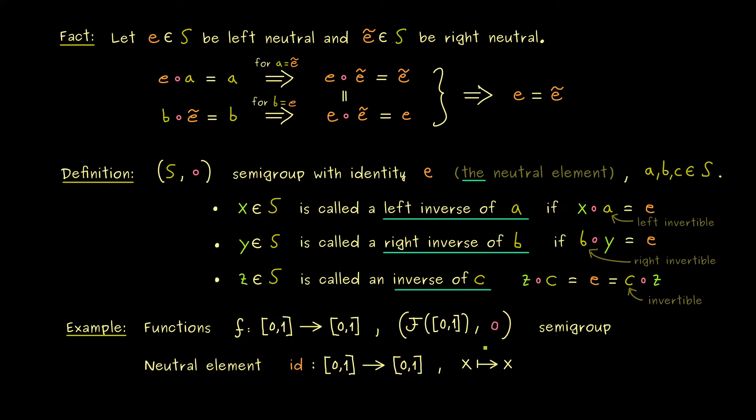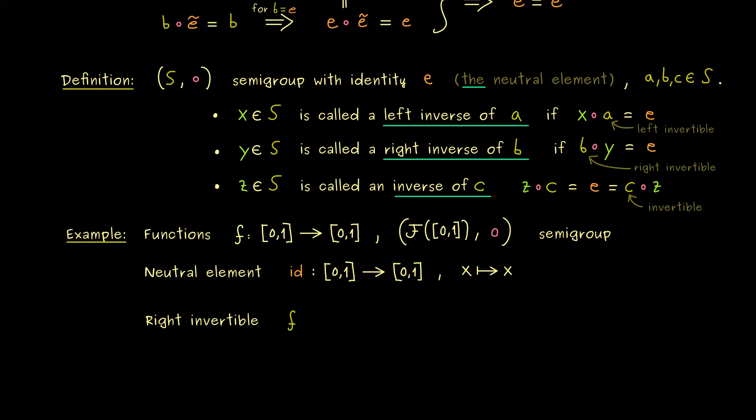And now I give you a map f that is right invertible. Namely this is a function that sends x to 4 times (x minus one half) squared. And maybe to get an idea for this function let's sketch the graph of it.